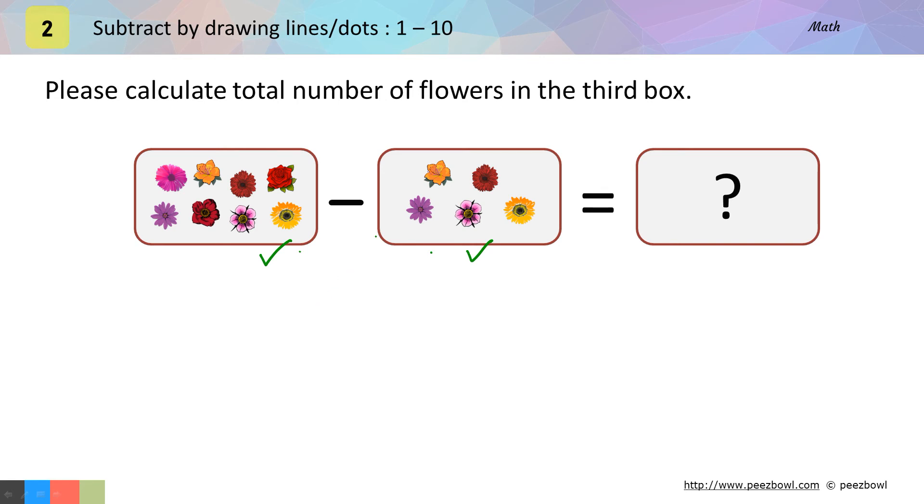Let us see how I do it. First, I will count number of flowers in the first box. In the first box, we have 1, 2, 3, 4, 5, 6, 7 and 8 flowers. I will write it down.